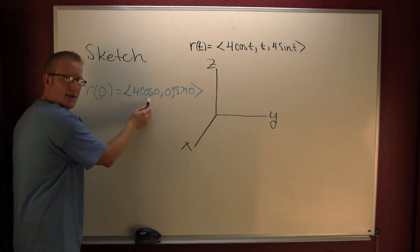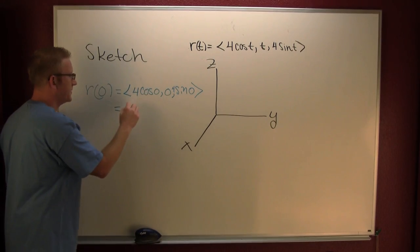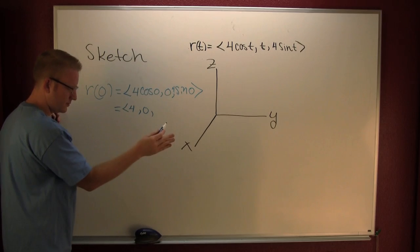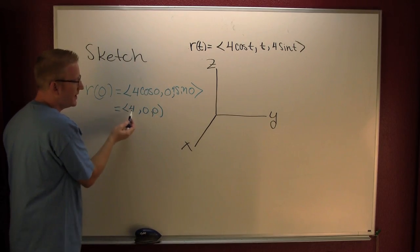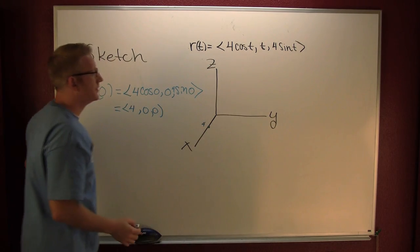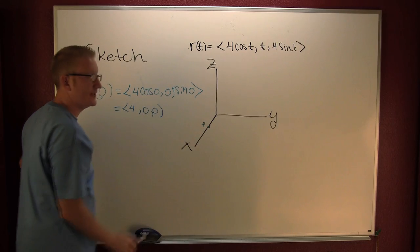So what's the cosine of zero? Yeah, that'd be one. Fun. Yes. So it's going to be at 4, zero, and the sine of zero. That's zero. So it's going to be 4 on the x, zero on the y, and zero on the z.